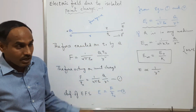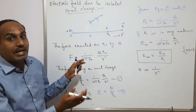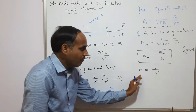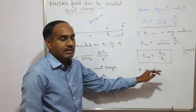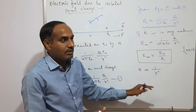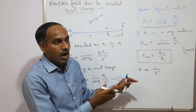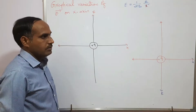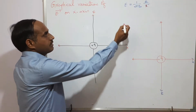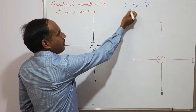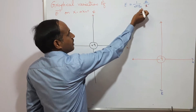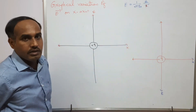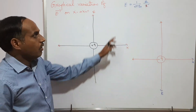Now we can plot a graph by taking electric field strength on the y-axis and position on the x-axis, and check how it varies. We have E = (1/4πε) × q / x², so we will check how the electric field strength varies with position.